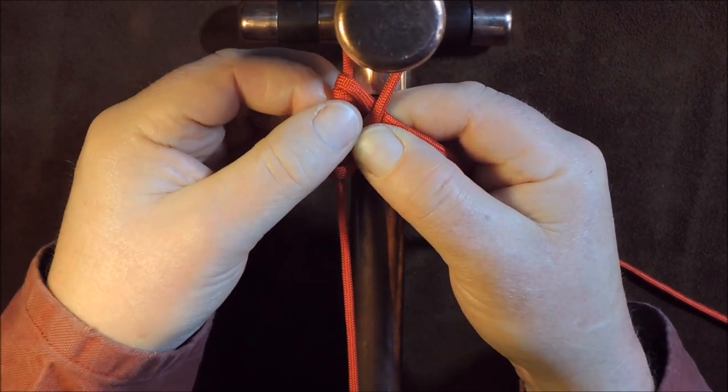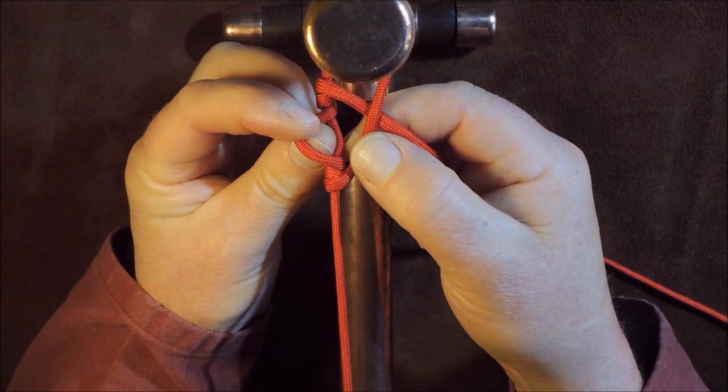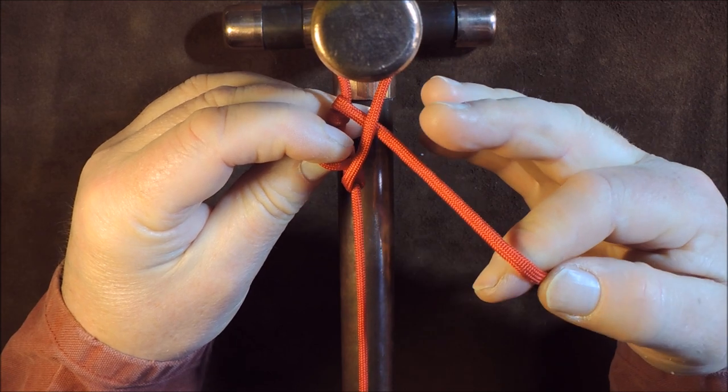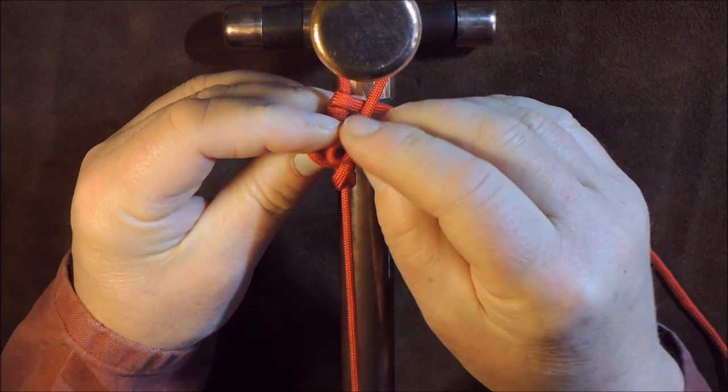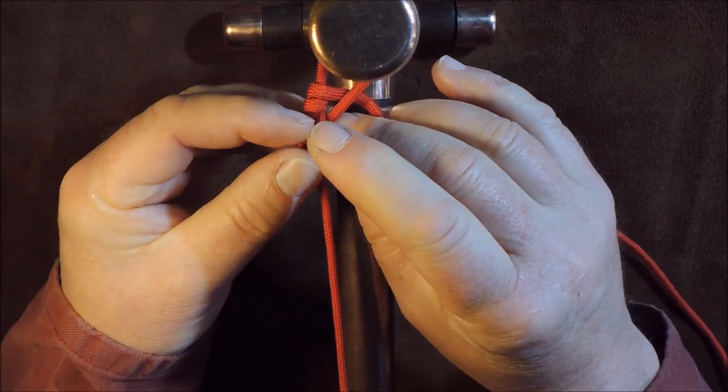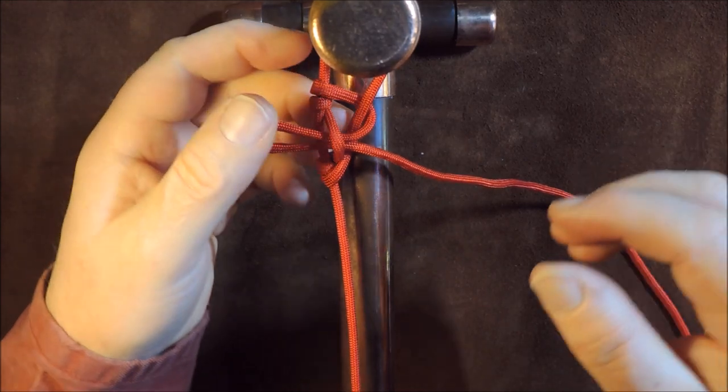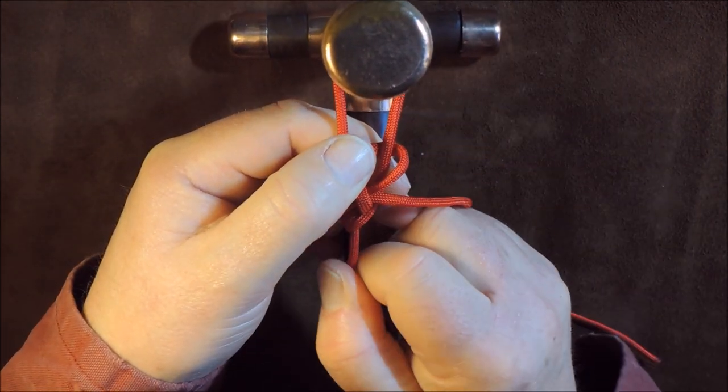Through that hole a second time, so that we just have a small loop protruding there where my thumb is poking through. Then with the working end again, just form a loop in your cord there and pass that loop where my thumb was. And then that is the Faramond friction knot.